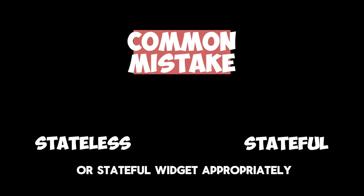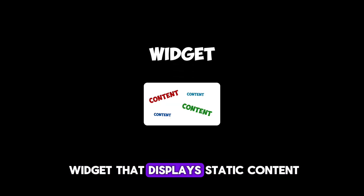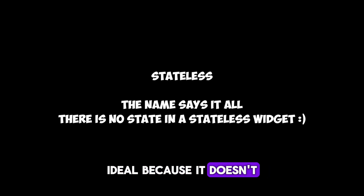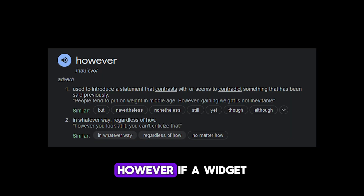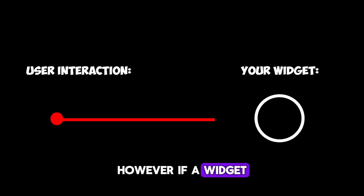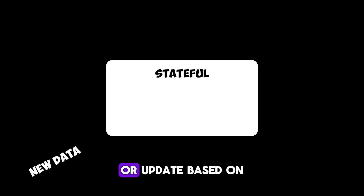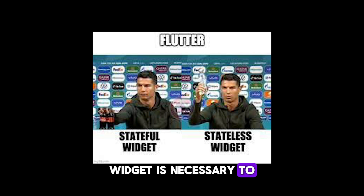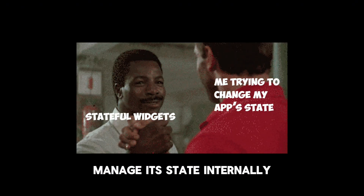Number one: a common mistake developers make is not using stateless or stateful widgets appropriately. If you have a widget that displays static content, using a stateless widget is ideal because it doesn't maintain any state. However, if your widget needs to handle user interactions or update based on external data, then using a stateful widget is necessary to manage its state internally.